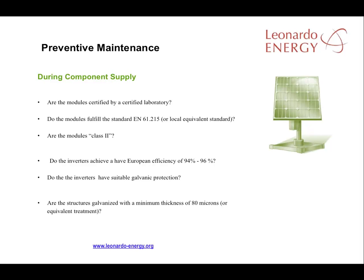In choosing components, special care should be taken over the main and most expensive elements in the solar plant: the modules and inverters. For the modules, there are three issues to consider. Are the modules properly approved by a certified laboratory? Do they meet local and national standards? If the plant is in Europe, the relevant standard would normally be EN 61.215. Third, are the modules Class 2?